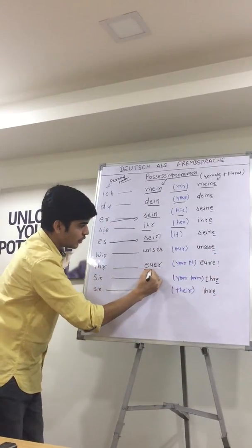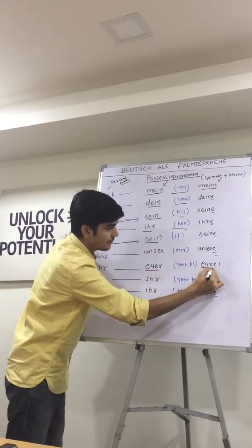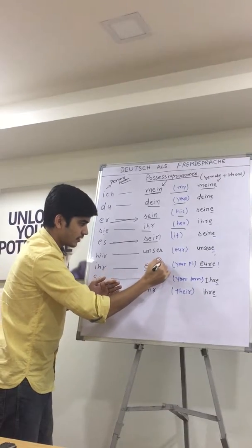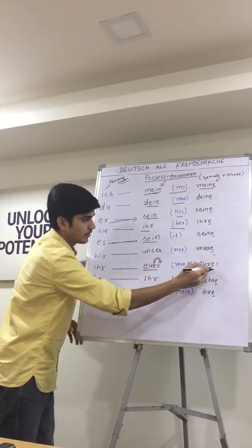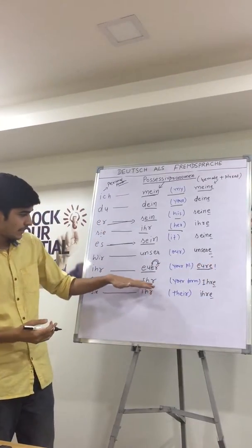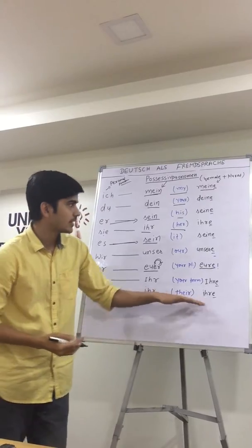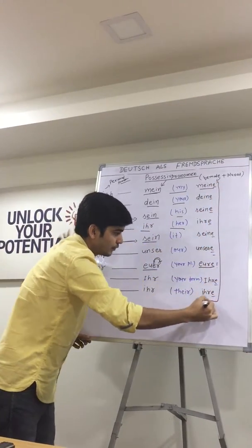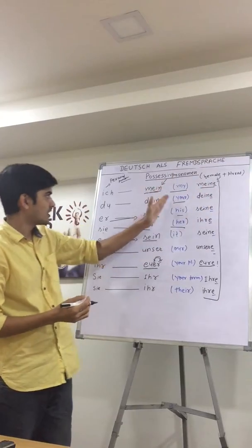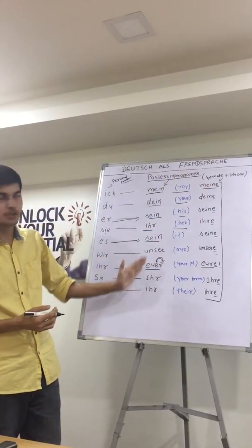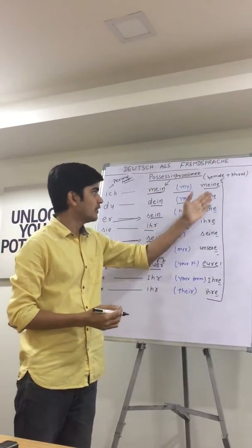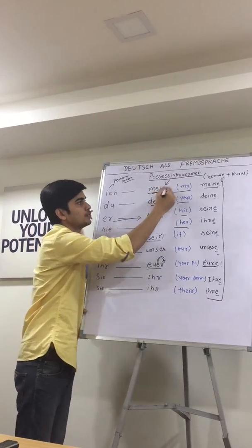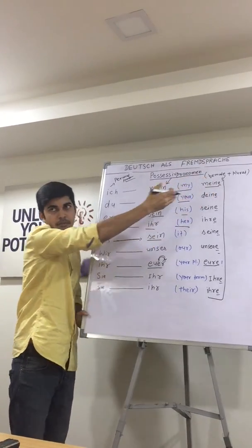So 'euer' becomes 'eure'. In the case of feminine and plural, we put an extra '-e' just after the possessive pronoun form. Now we will see in some exercises how and where we use 'mein', 'dein', 'sein', and the other possessive pronouns.